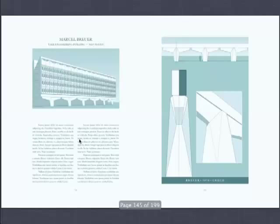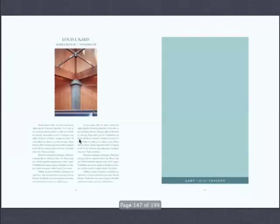Lou Kahn — only one, ever. We couldn't find anything by Kahn. This was like finding a hidden treasure: an unpublished synagogue in Long Island. By the way, he was awful at it. Harmon Cox. James Stirling — fantastic. This is the museum in Stuttgart.